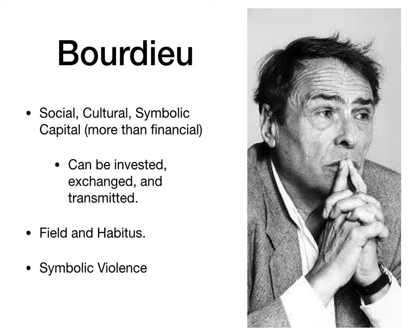Next we have Pierre Bourdieu, who did a lot of theorizing around ideas of class in society. He talked about the ways that class is reproduced and transmitted through the distinctions we make and the tastes we have — things like the food we eat, the sports we play, the leisure activities we do, or the music we listen to. He had a few important theoretical tools, the first being his different forms of capital: social, cultural, and symbolic capital, which can all be used similarly to financial capital.